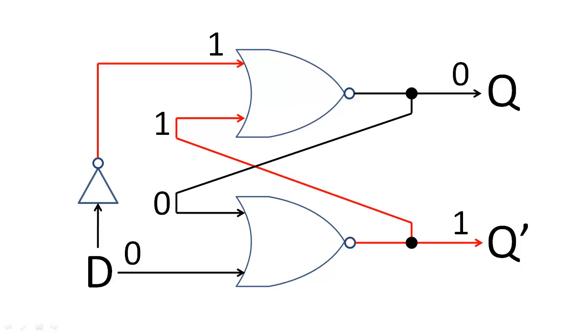When we change the data input to 1, the input's complement and Q prime become 0. Then, the state of the latch is set to 1.